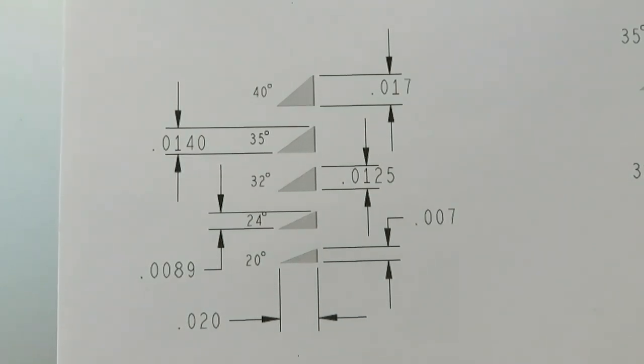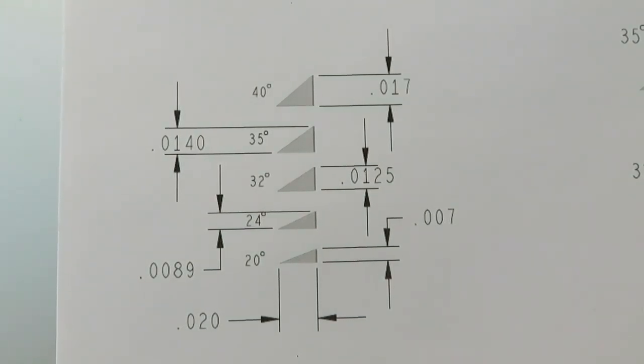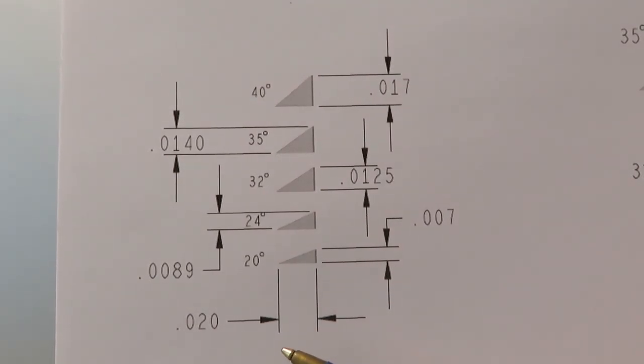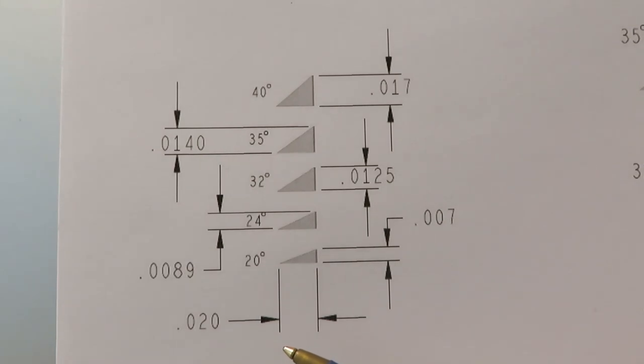Here you see those same angles—20, 24, 32, 35, and 40—but all you're seeing is the first 20 thousandths of that edge magnified. It won't matter how thick the blade is back at the ferrule. This is the part that's most susceptible to damage and doing all the work of cutting.